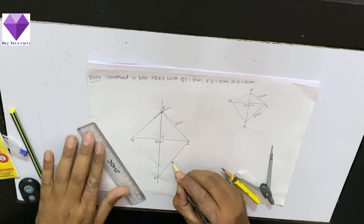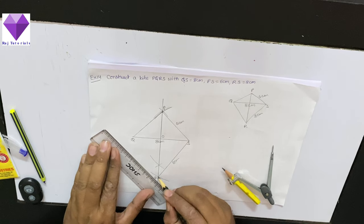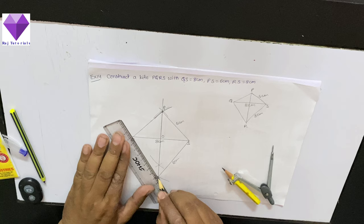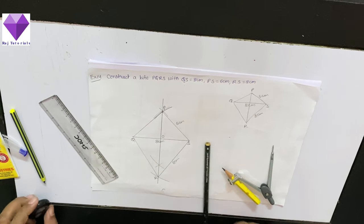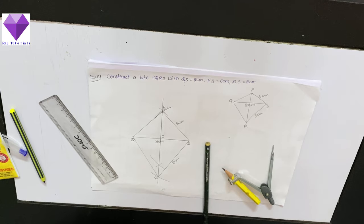This is 8 cm given to me, so this side also will be 8 cm. PQRS is my required kite. Thank you.